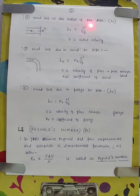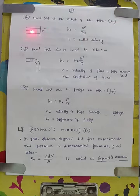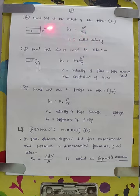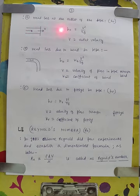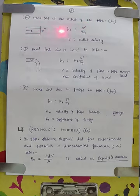Minor loss number four is head loss at the outlet of the pipe. It will be indicated by H subscript o. Suppose this is a pipe and fluid is flowing out from the pipe outlet. At the outlet of the pipe, head loss will be calculated as H_o = V² / 2g, where V is the outlet velocity.